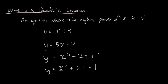A quadratic equation is an equation where the highest power of x is 2. Let's have a look at some of these equations. In the first equation, the highest power of x is 1 — as you can see, we have x to the power of 1. So because the highest power of x is 1, this first equation is not a quadratic equation. The second equation again has the power of x equal to 1, so it's not a quadratic.